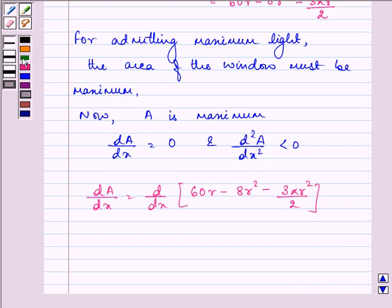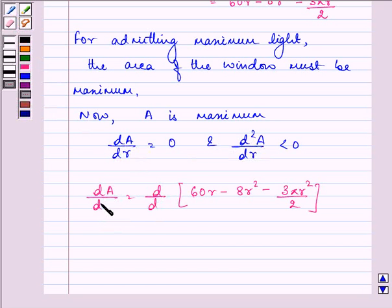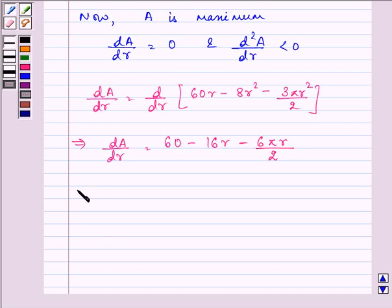We will be differentiating it with respect to r. This implies, dA by dr is equal to 60 minus 16r minus 6 pi r upon 2. So, this further implies, dA upon dr is equal to 60 minus 16r minus 3 pi r.